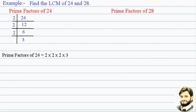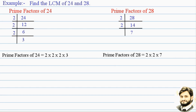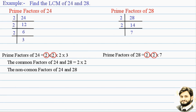Now the prime factors of 28: 28 divided by 2 we get 14, and 14 divided by 2 we finally get 7. So the prime factors of 28 equal 2 × 2 × 7. The common factors of 24 and 28 are 2 × 2.